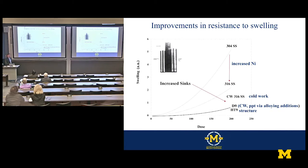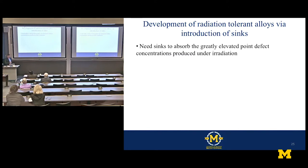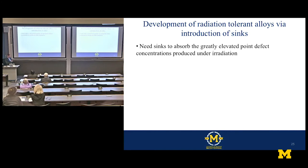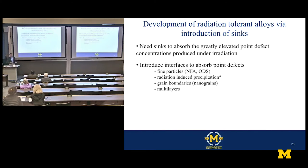The progression of approaches: going from 304 to 316 stainless — the increased nickel made a fairly substantial impact on reducing swelling. Cold working also reduces swelling. But we're still way above where we need to be. The community has adopted the idea of radiation-tolerant materials based upon introducing sinks — locations that can absorb vacancies and interstitials, cause them to recombine, recreate the perfect lattice, so they don't agglomerate into voids, loops, or precipitates. You're trying to remove the defects put in by the radiation by littering the microstructure with sinks.